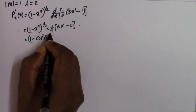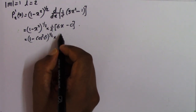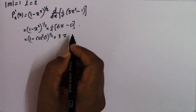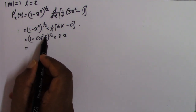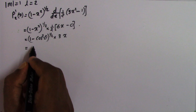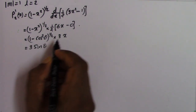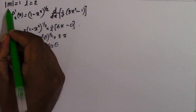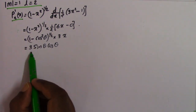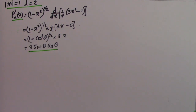That is equal to (1 - x²) raised to 1/2 into 3x. Since (1 - x²) equals sin²θ, the root of that is sinθ. So P_2^1(x) equals 3sinθ·cosθ, where x = cosθ. This is the value of P_2^1(x) when m=1 and l=2.